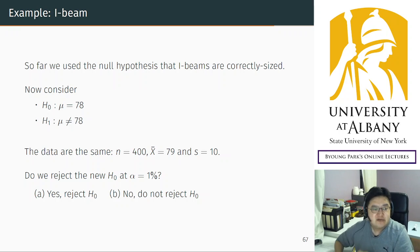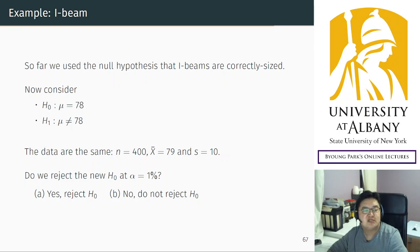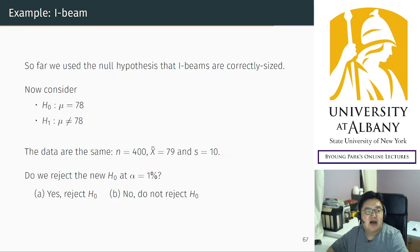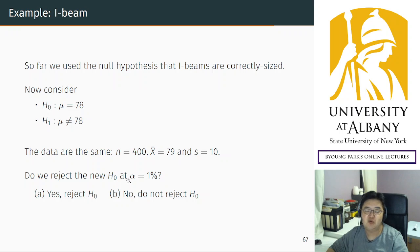Hello. So at the end of the last video, the last question was: what happens when the null hypothesis changes? I changed the null hypothesis from 80 to 78, but the data are the same — the data numbers are the same and the significance level is the same at one percent. What is the conclusion?